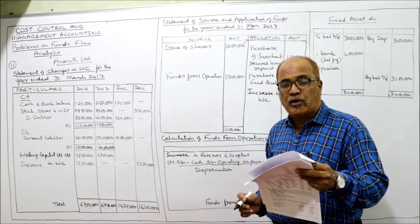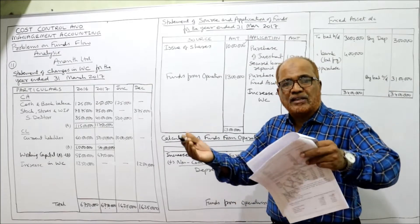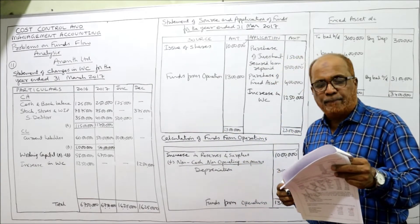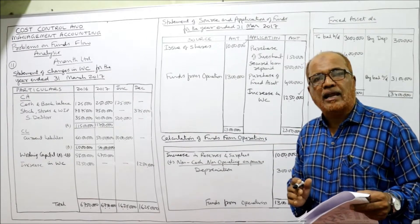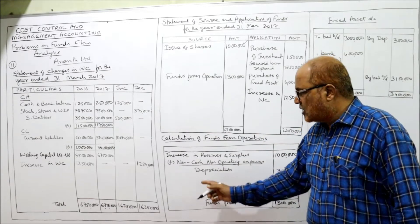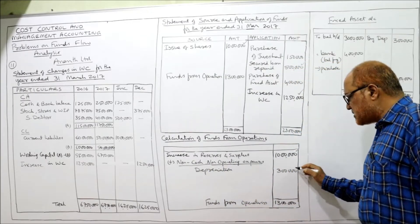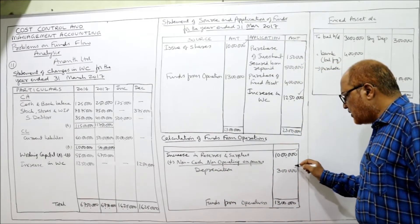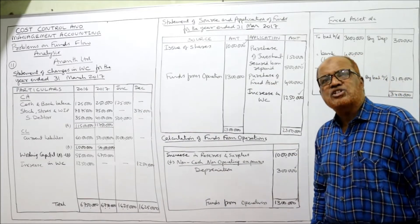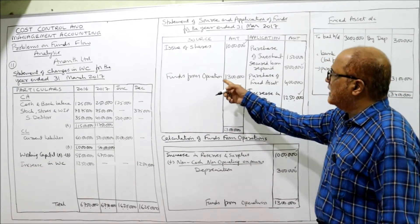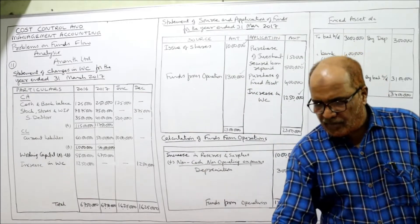There was addition to fixed assets during the year amounting to 4 lakh rupees — meaning fixed assets were purchased for 4 lakh. Depreciation for the year is 3 lakh. Depreciation is a non-cash item, so we add it back: reserves and surplus increase of 10 lakh plus depreciation of 3 lakh gives funds from operation of 13 lakh.